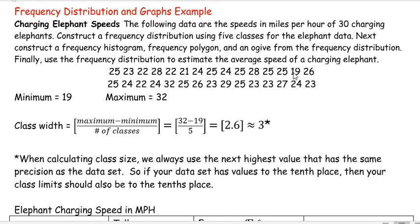But if I look through, I can find that the minimum speed is 19, and the maximum speed is 32. That's going to help me decide how I'm going to break these classes up, right? I need to know the minimum and the maximum value.